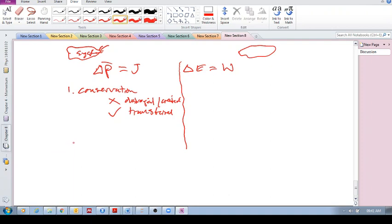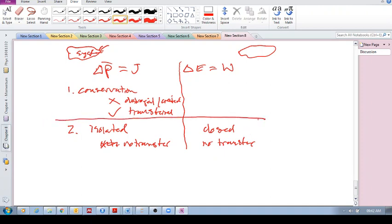The second idea is, similarity is for, and this just follows on from this, for momentum, an isolated system means that there is no transfer, no transfer of energy, sorry, of momentum. For energy, you've got a closed system, means no transfer of energy. Okay?